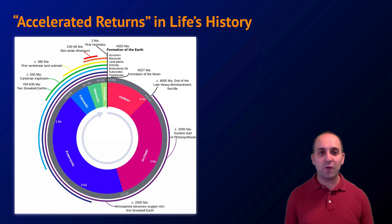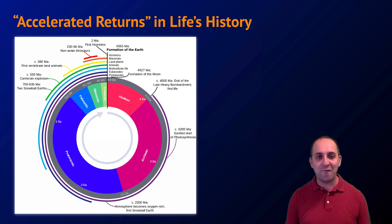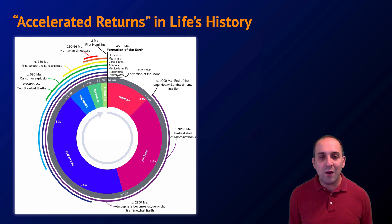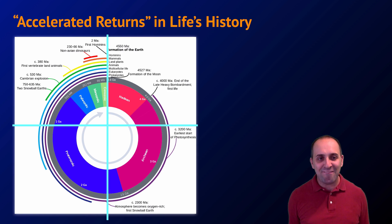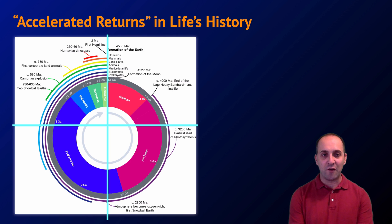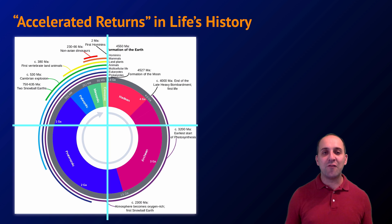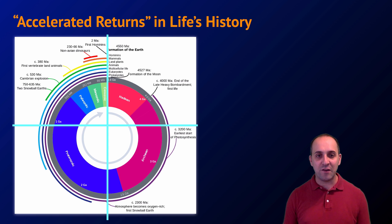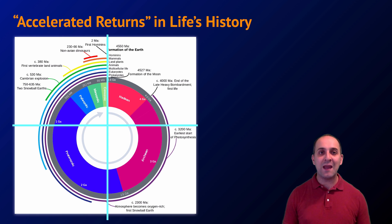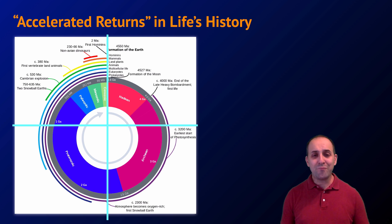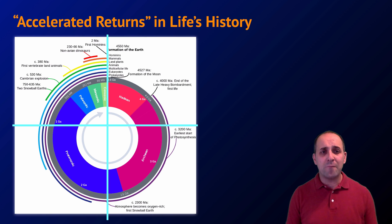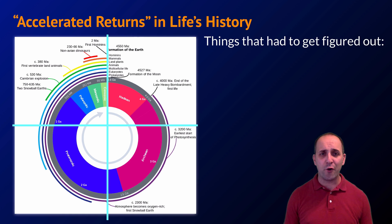Moving to patterns in life's history: looking at this graph, most of the interesting stuff happens in the last quarter of Earth's history — actually in the last half of the last quarter. This is the notion of accelerated returns: life starts slow after it originates, but then hits critical points where the complexity and diversity of life increase exponentially. It's natural to wonder why we didn't get complex multicellular life earlier in Earth's history.